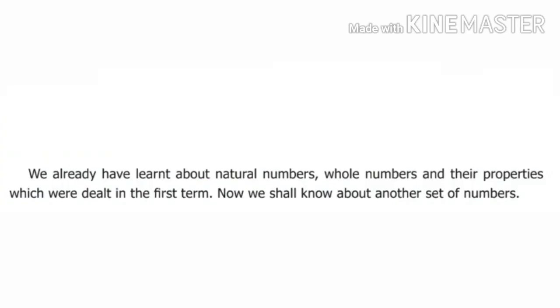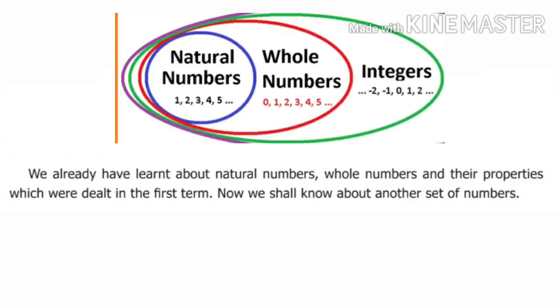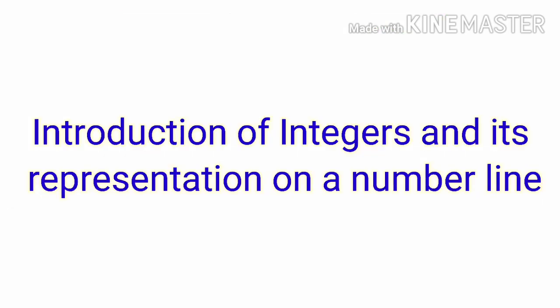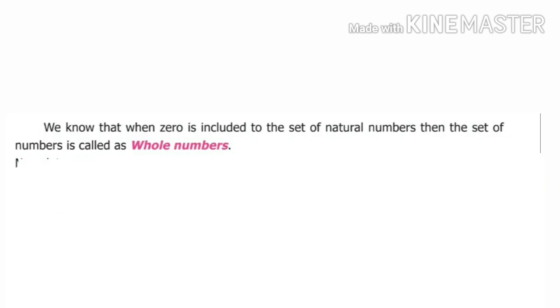Students, we already have learnt about natural numbers, whole numbers and their properties which were dealt in the first step. Now, we shall know about another set of numbers. We know that when 0 is included to the set of natural numbers, then the set of numbers is called whole numbers.